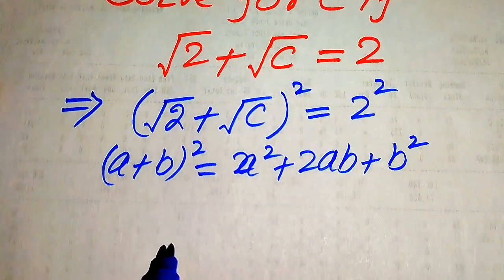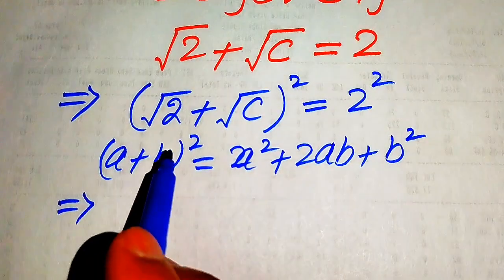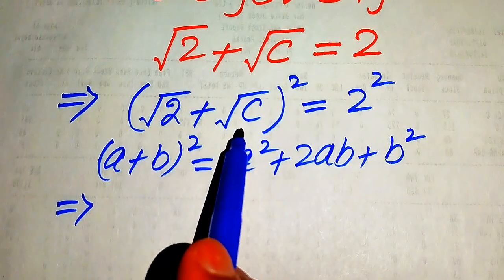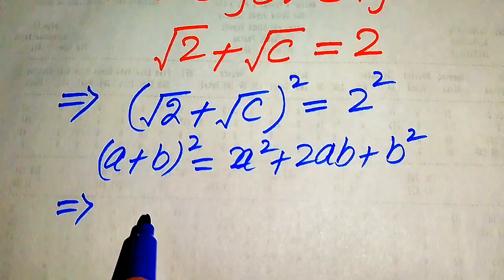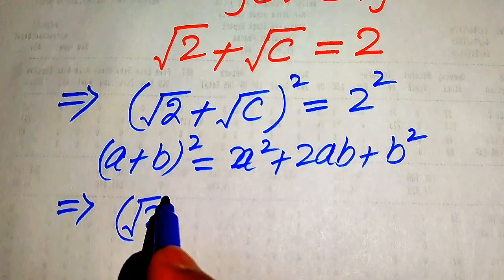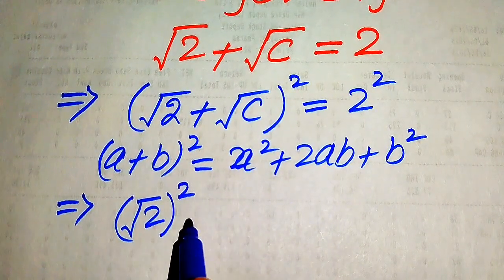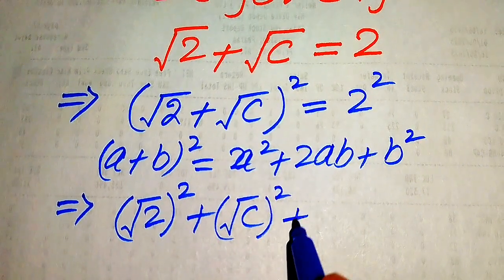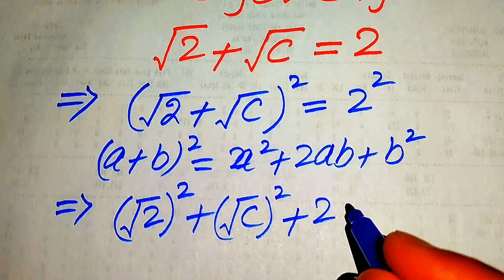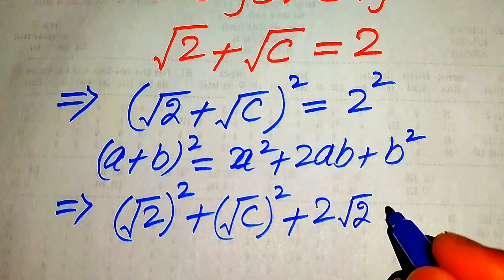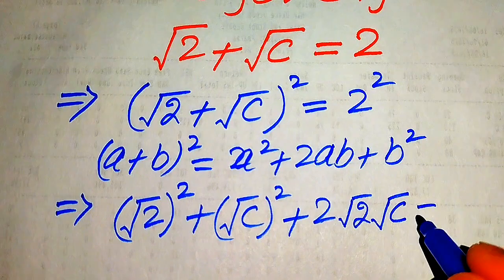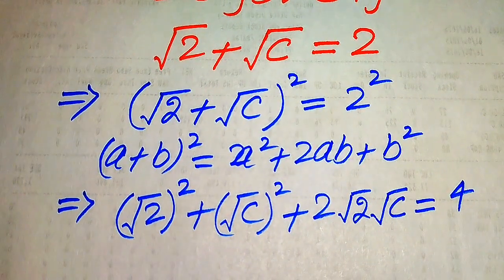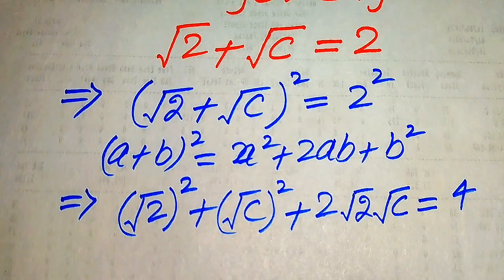According to this formula we can expand the left hand side, because here a equals square root of 2 and b equals square root of C. When we apply this formula the left hand side is written as: (√2)² plus (√C)² plus 2 times a times b, where a is √2 and b is √C, and this equals 2 squared, which is 4.